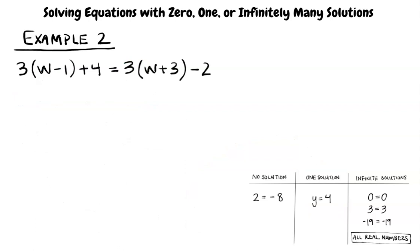How about you give this example a try? Okay, so distributing is the first step. Doing so to both sides, I got 3w minus 3 plus 4 equals 3w plus 9 minus 2. Now, combining like terms, I get 3w plus 1 equals 3w plus 7.